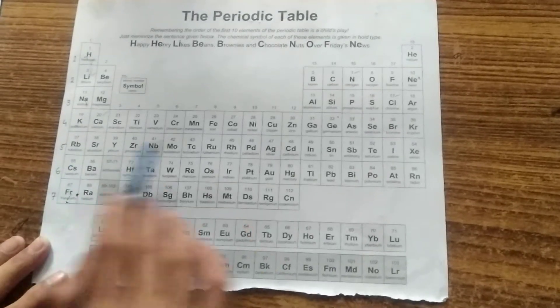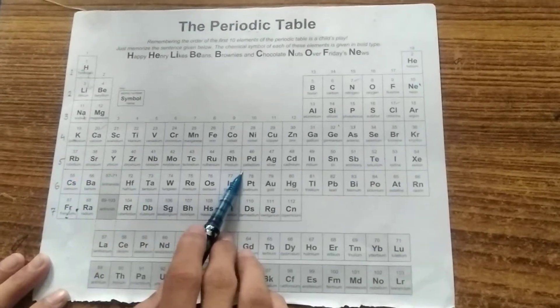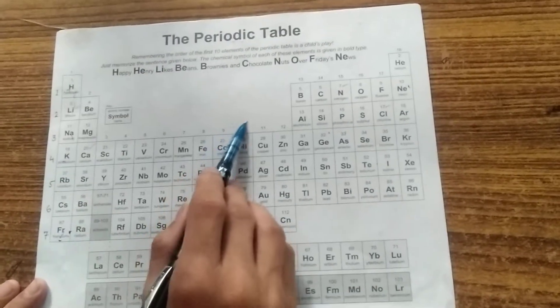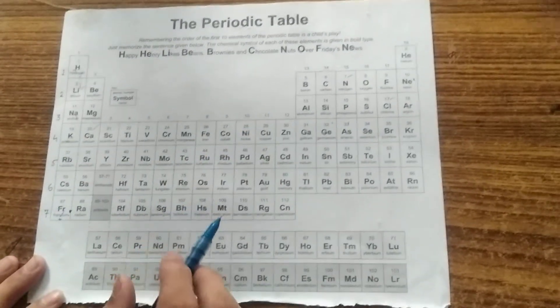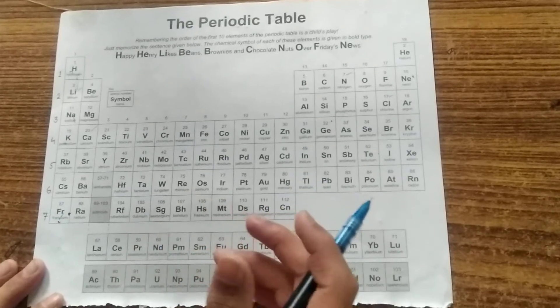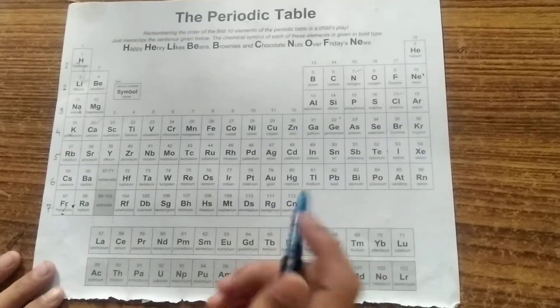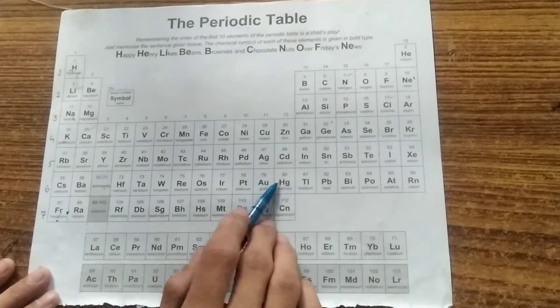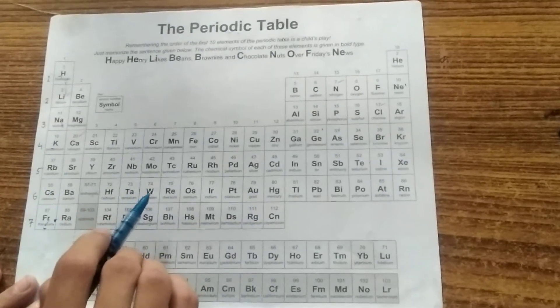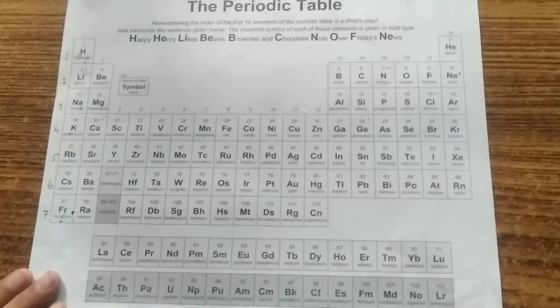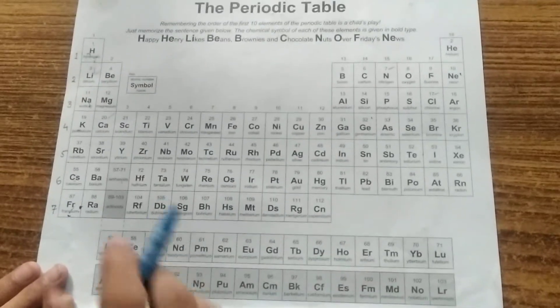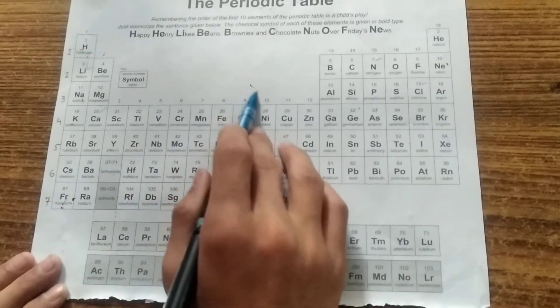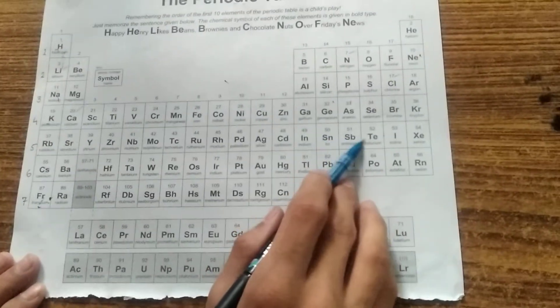Now as we move from left to right, left to right in a period, nuclear charge will increase. Charge will increase. Then the atomic radius will decrease. And obviously the size will decrease. As we move from left to right, the metallic character will decrease. And as the metallic character decreases, the non-metallic character will increase. Next is as we move from left to right in the period, first the valency will increase, and then it will also decrease, and finally zero.